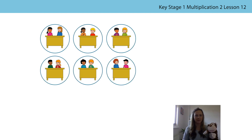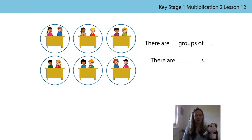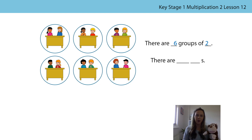Have a look at this picture. What can you see? Can you fill in the stem sentences so that they represent the picture? What numbers will you put in the gaps and where can you see those numbers in the picture? Bongo and I are going to have a go too, so pause the video whilst you have a think. Have a look at what Bongo and I think and see if you agree or disagree. We think that there are six groups of two, or we can say there are six twos.